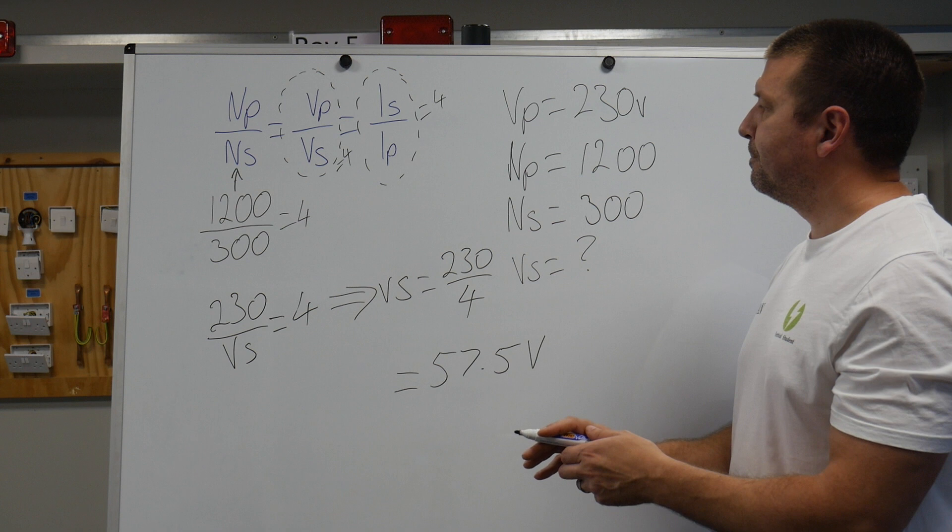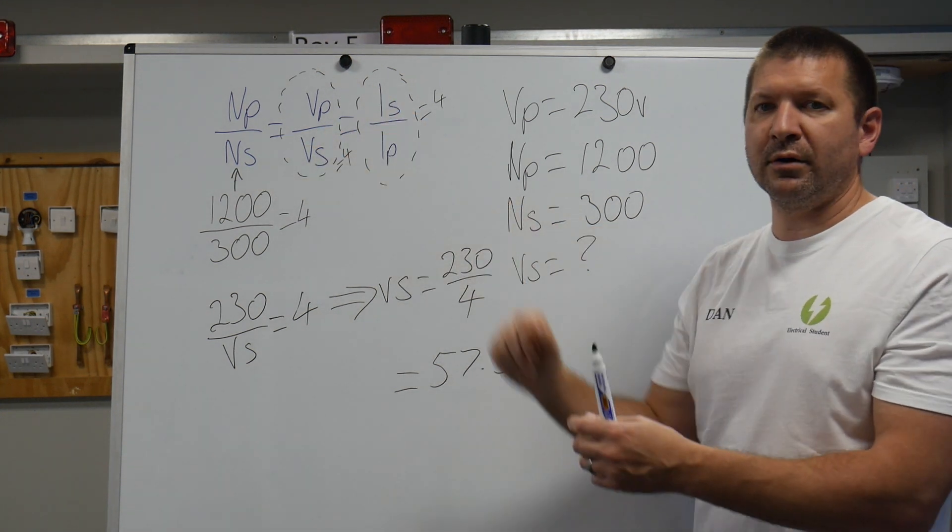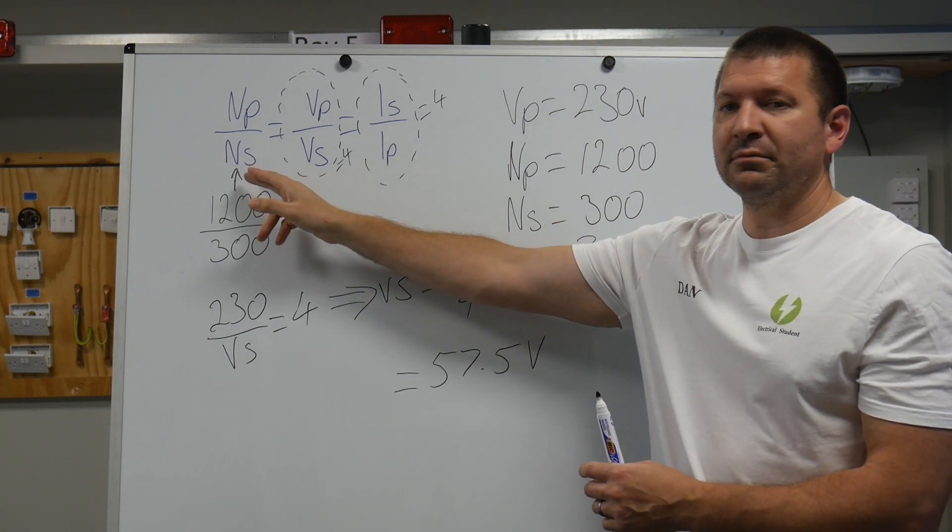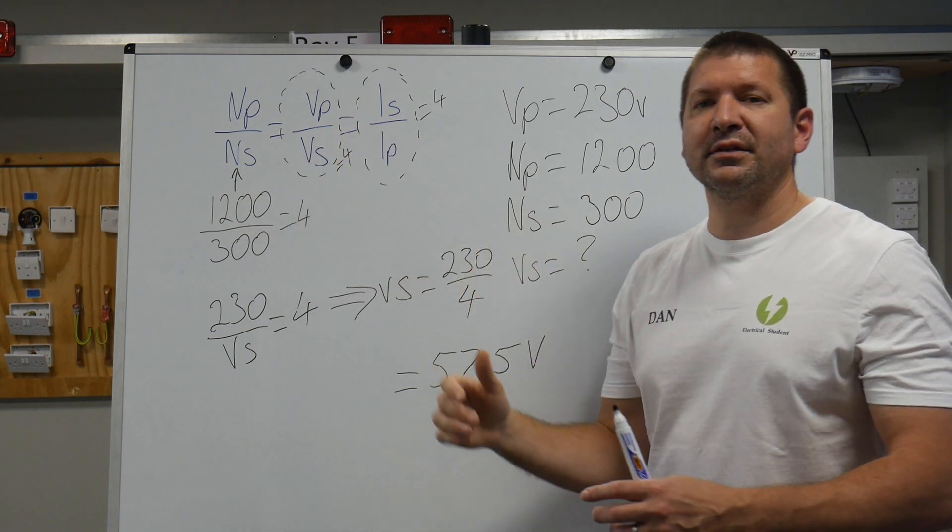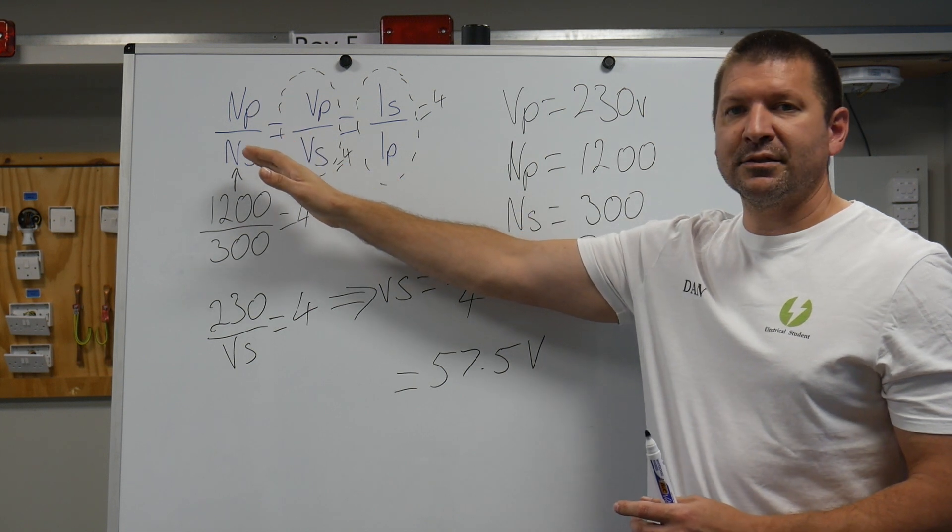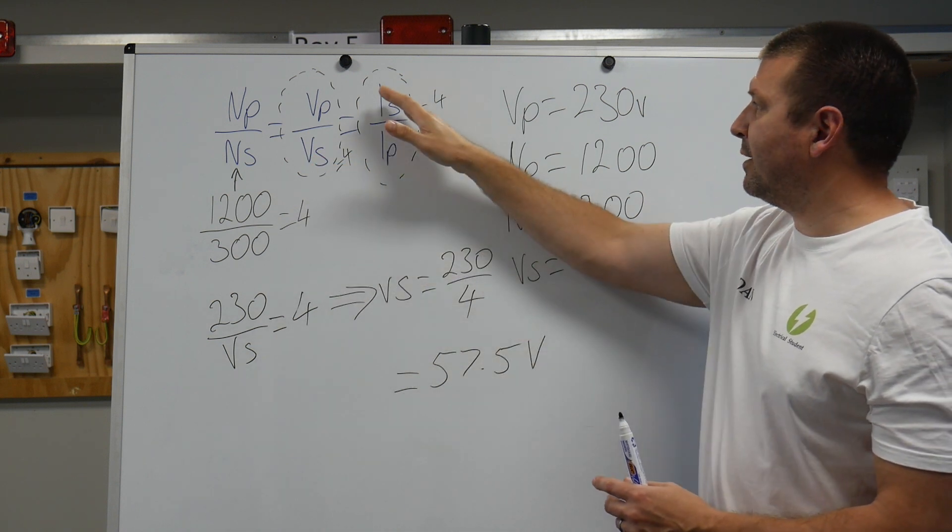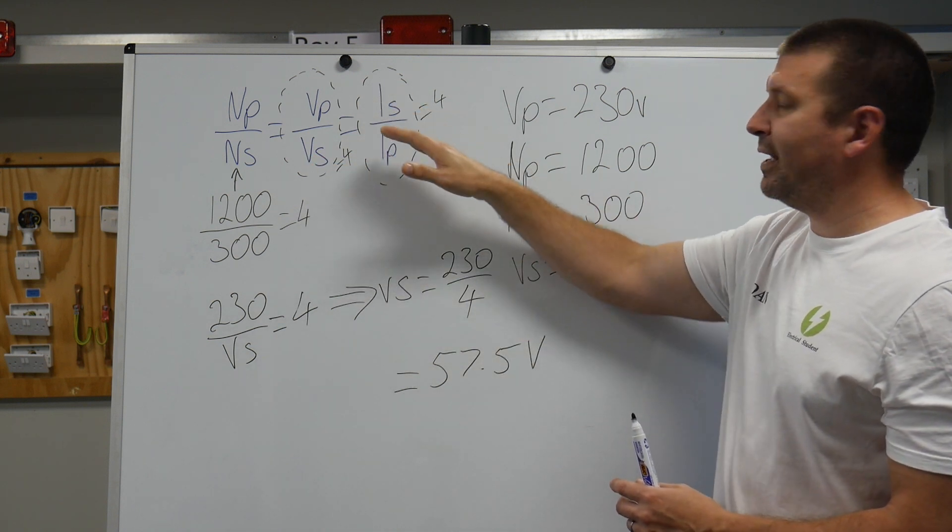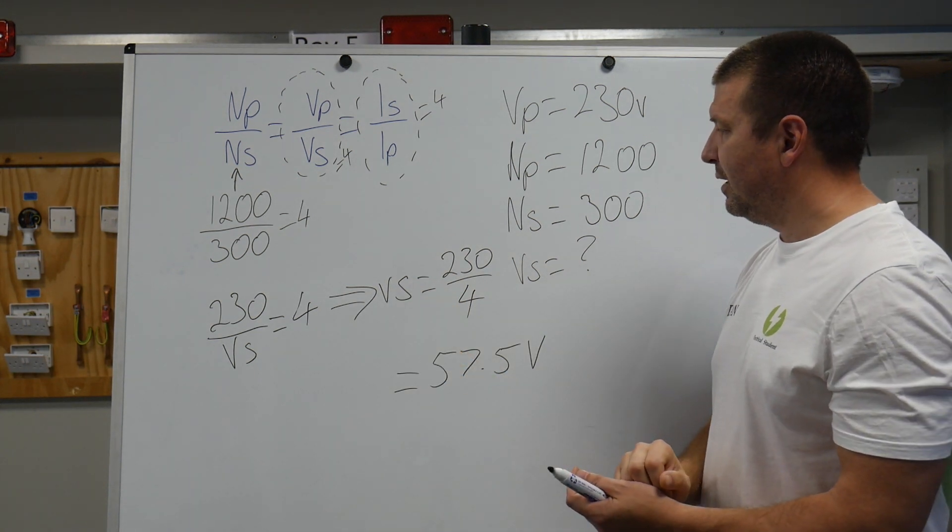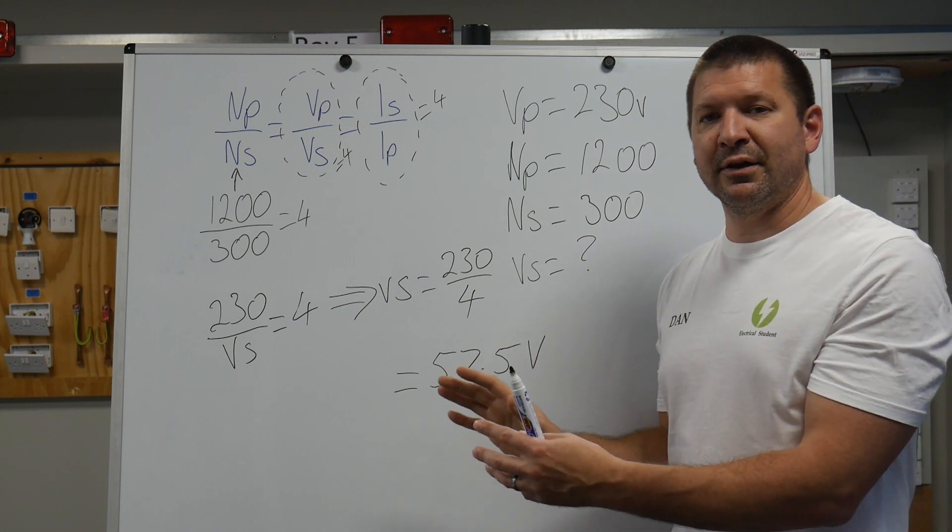The first way is that we transpose the formula, we use all four parts to it. This way we just look at each individual fraction and we find this golden number for our question. So Np divide Ns equals 4, Vp divide Vs equals 4, and Is divide Ip equals 4 for this question. In my experience, lots of people have preferred to use this way. They just find it a little bit simpler.